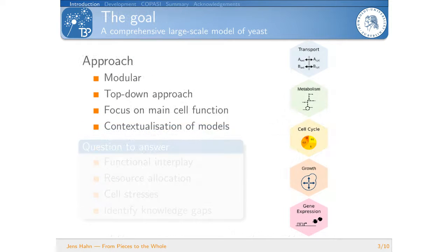Now to our approach. As I said it's a modular approach. It's a top-down approach. So we divide the cell into main cell functions. I have put here the five we are focusing on at the moment. That's first of all a transport module consisting of the ion homeostasis and the nutrient uptake. Secondly we have the metabolism meaning fermentation, respiration and the production of precursors for the other modules. Then of course the cell cycle module that drives the whole thing. Then we have the growth module meaning responsible for the volume growth for the budding process and also for the cell wall synthesis. And last but not least we have the gene expression module meaning transcription, translation and protein degradation in these cells.